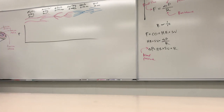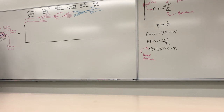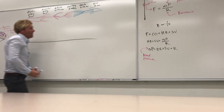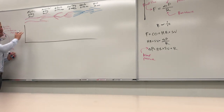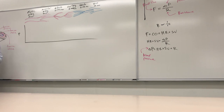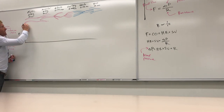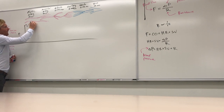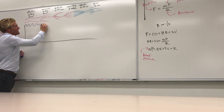Pressure in the elastic arteries is the highest and fluctuates up and down with each heartbeat — the heart contracts, pressure goes up; relaxes, pressure goes down. By the time we get to the muscular arteries, pressure starts to decrease and those fluctuations start to even out because they're further from the pump.